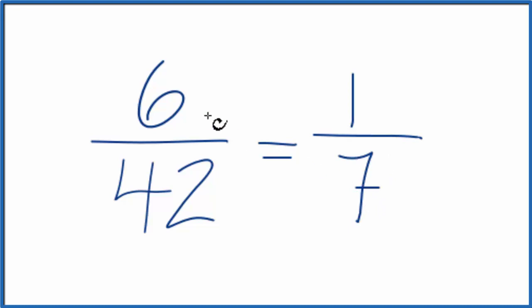So these are common factors to 6 and 7. That means that when we simplify 6 over 42, we get 1 over 7, and we can't reduce this any further.